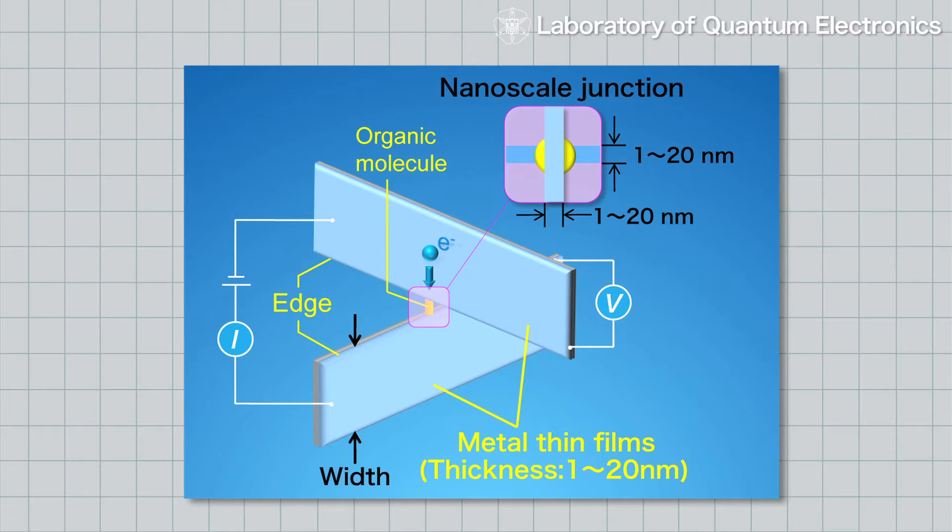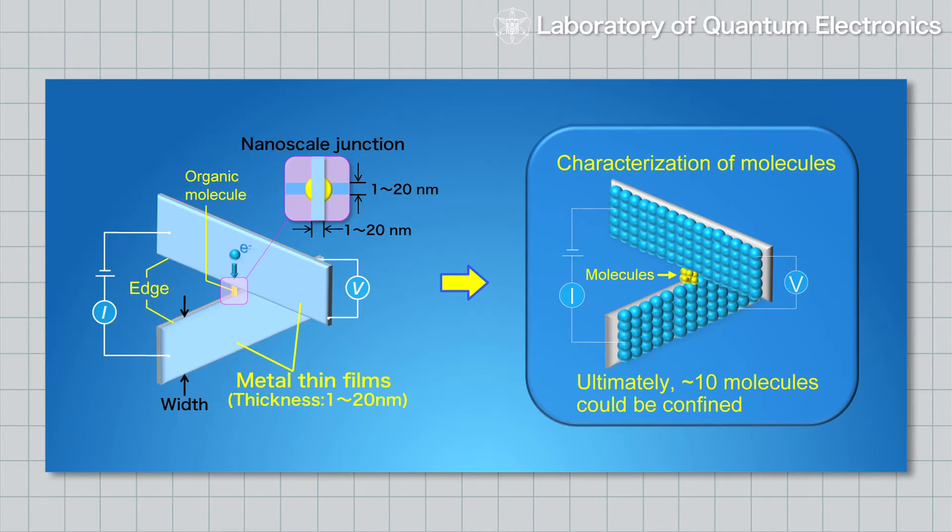In a quantum cross device, when a layer of organic molecules is formed between the metal edges, the number of organic molecules is a few hundred or ultimately a few tens of molecules.